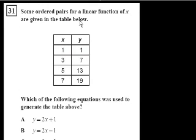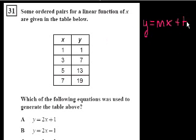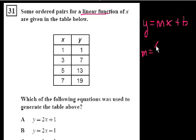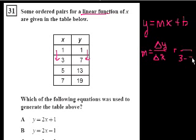Some ordered pairs for a linear function of x are given in the table. Which equation was used to generate the table? We use slope y-intercept form: y equals mx plus b. The slope equals change in y over change in x. When x goes from 1 to 3, y goes from 1 to 7. Change in x is 3 minus 1 equals 2. Change in y is 7 minus 1 equals 6.